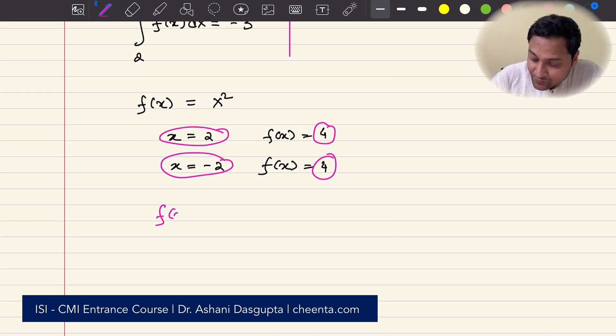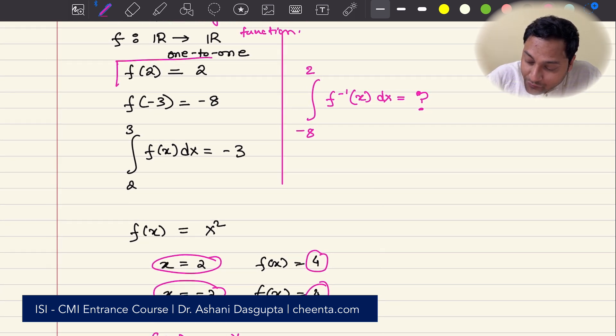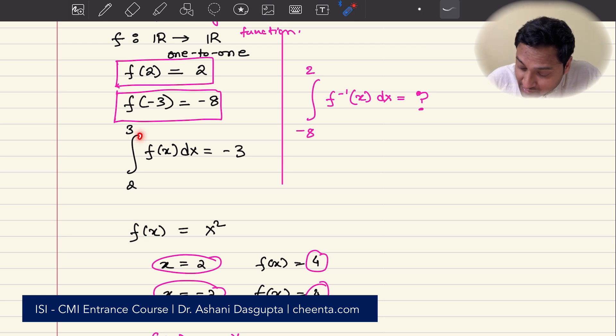Examples of one-to-one functions are like this. f of x is equal to e to the power x. One-to-one functions are actually easy to work with. So, it's also given that f of 2 is equals to 2. f of minus 3 equals to negative 8. And the integration of f of x from 2 to 3 is negative 3. So, with this information, we want to find out the integral from negative 8 to 2 of f inverse x dx.